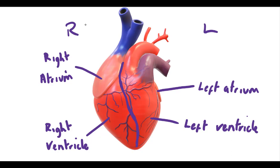We've got all these blood vessels here. What we know is that the vena cava comes into the right atrium because it brings deoxygenated blood into the right hand side of the heart, which is responsible for the pulmonary circulation. So this here is the vena cava. This vessel coming out here is the aorta, carrying oxygenated blood from the left ventricle to the rest of the body.